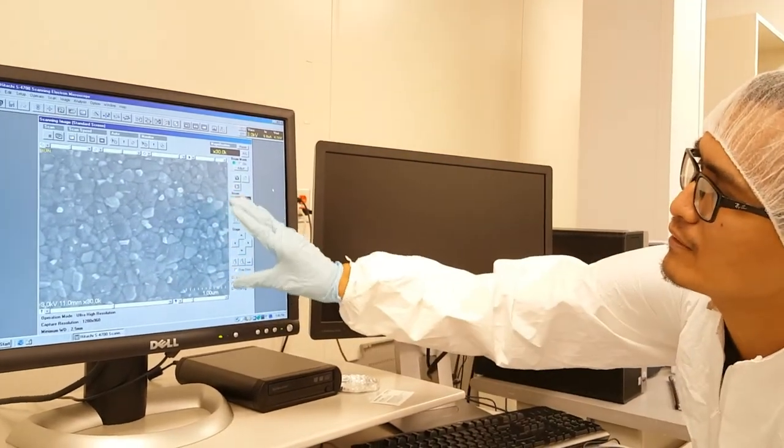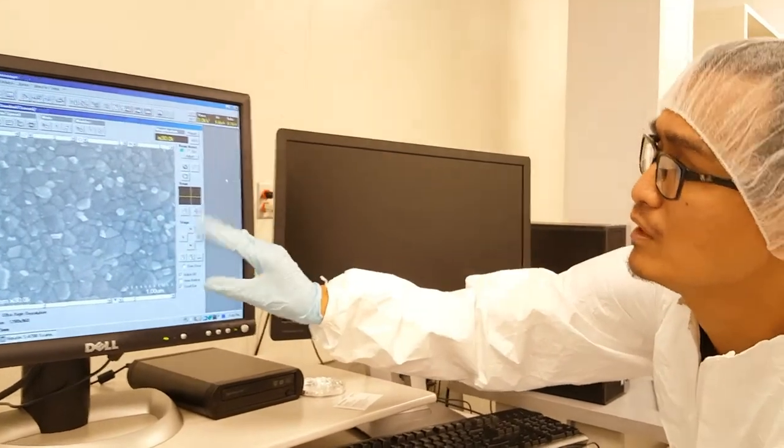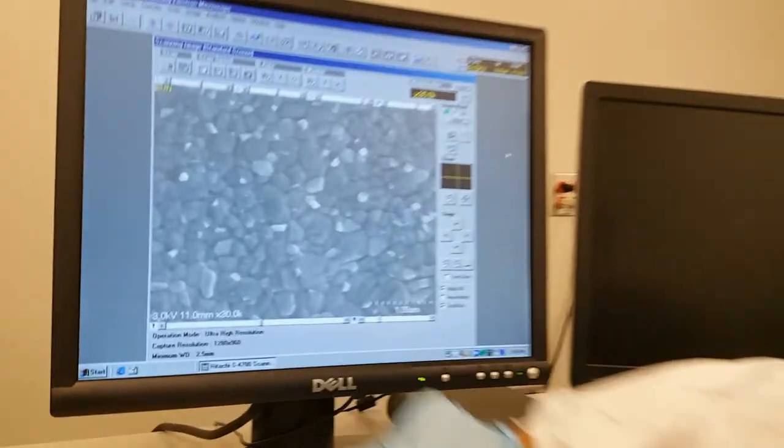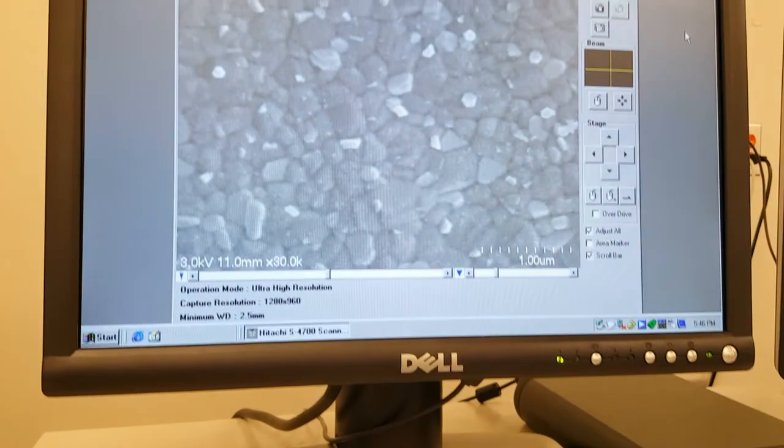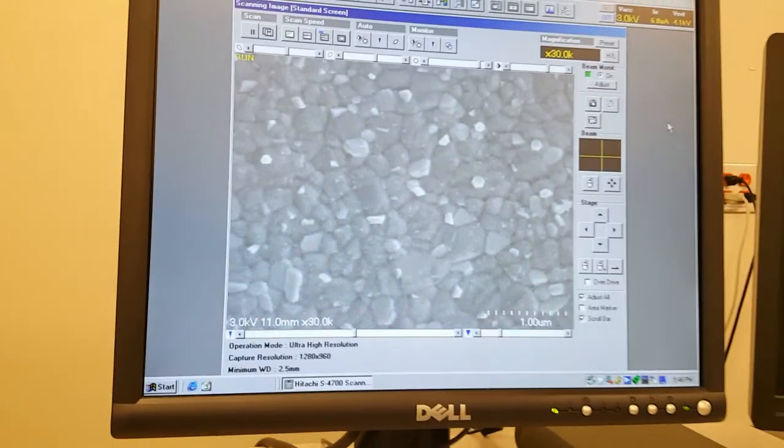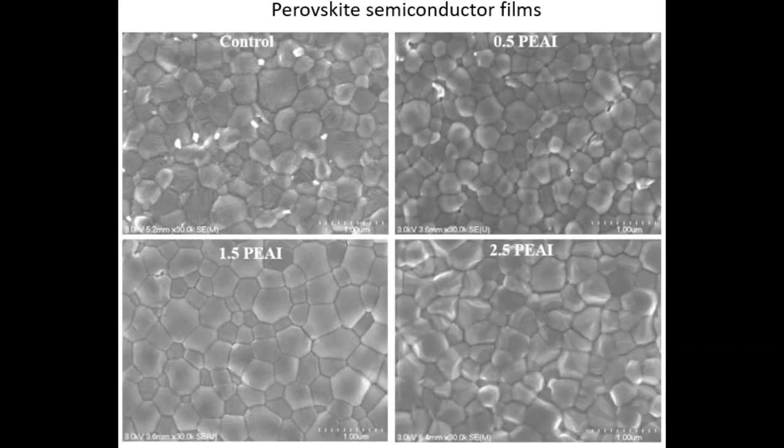This image right here is a magnified version of the sample which has a magnification of 30K. Here you can see much clearer images of perovskite semiconductor films prepared with various amounts of an additive called PAI, where you see variations in the grain size and smooth morphology of the films with various amounts of the additive.